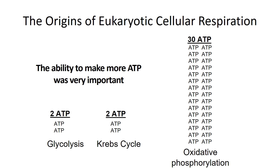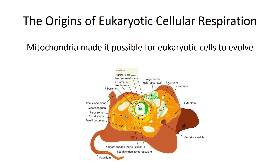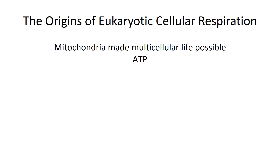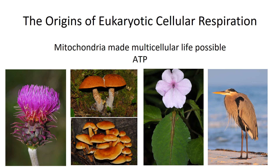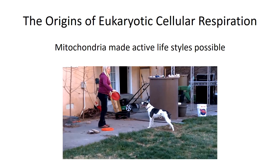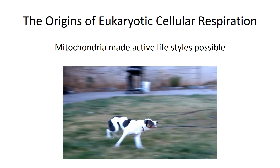For every molecule of glucose that comes into a cell, you get much, much more ATP out, so the cells had more energy to work with. Having more ATP was a crucial step in the evolution of cells. Eukaryotic cells were able to evolve — you get this larger, more complex cell. Mitochondria not only made eukaryotic cells possible, they also made multicellular life possible. All the plants, fungus, and animals — like this small lizard and this bird — all multicellular life requires lots of energy to exist. It's a good thing that mitochondria make so much ATP, because it allows for a really active lifestyle.